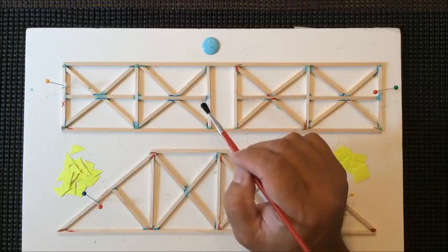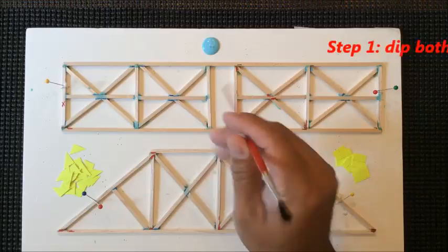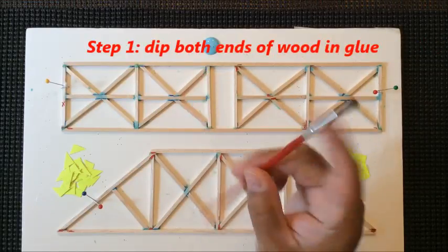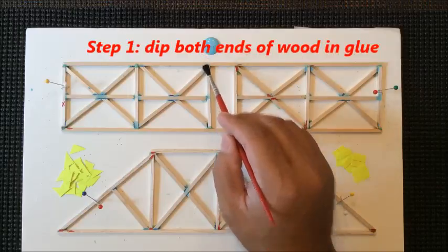We've already completed step one of the four-step gluing process. You've already glued the ends, dipped both ends of the wood in the glue. For step number two, I'll start with this joint right here.